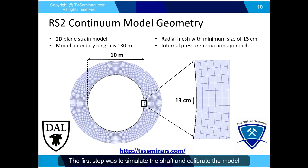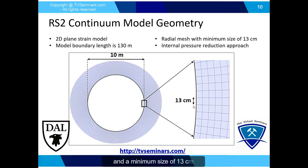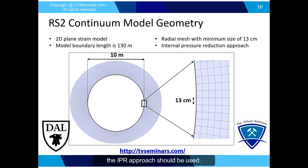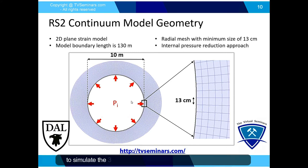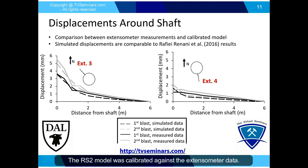The first step was to simulate the shaft and calibrate the model based on extensometer data. A 2D plane strain model in RS2 was used to simulate the shaft, using a radial mesh with quadrilateral elements with a minimum element size of 13 cm. Since this is a 2D model simulating a 3D shaft advance, the internal pressure reduction approach based on the CCM was used. An internal pressure equal to the in-situ stress magnitude is applied to the excavation boundary and then gradually reduced to zero to simulate the 3D excavation advance. The RS2 model was calibrated against the extensometer data.